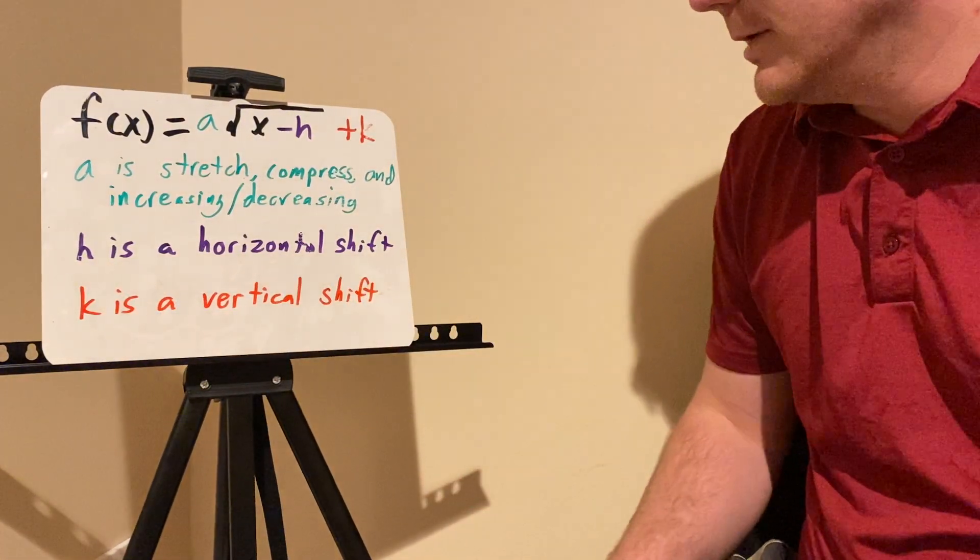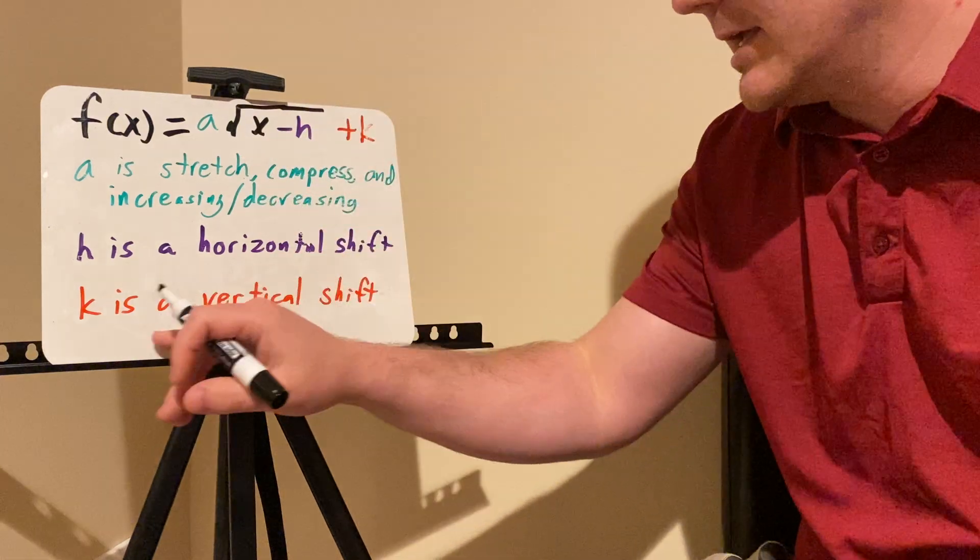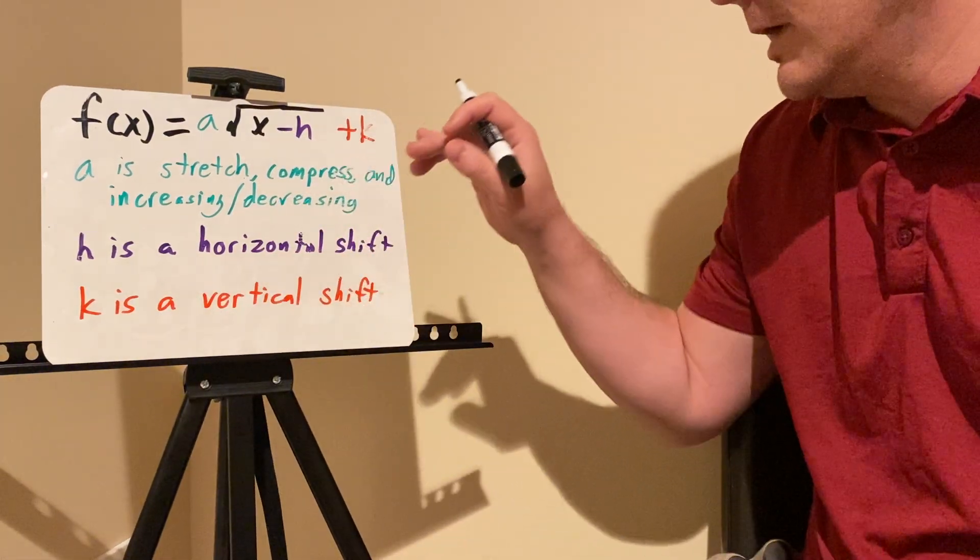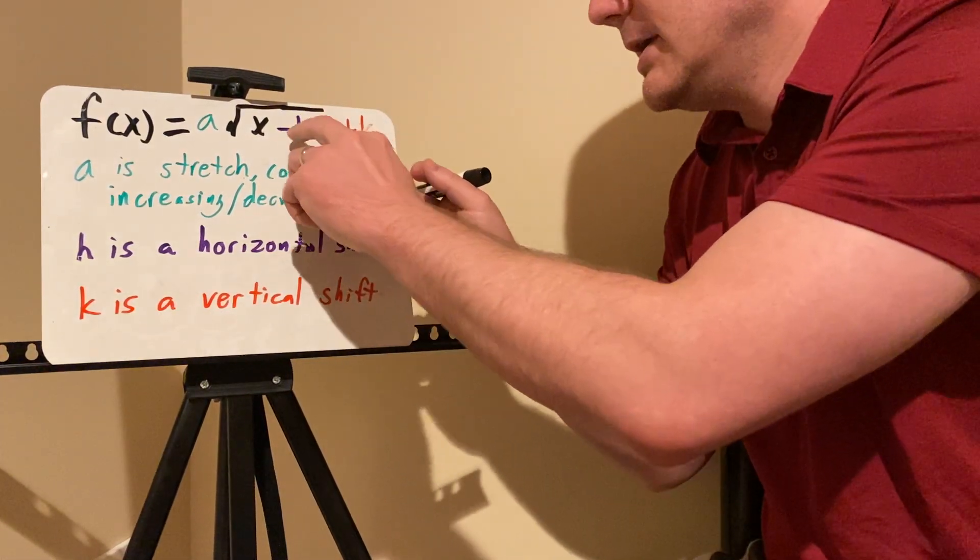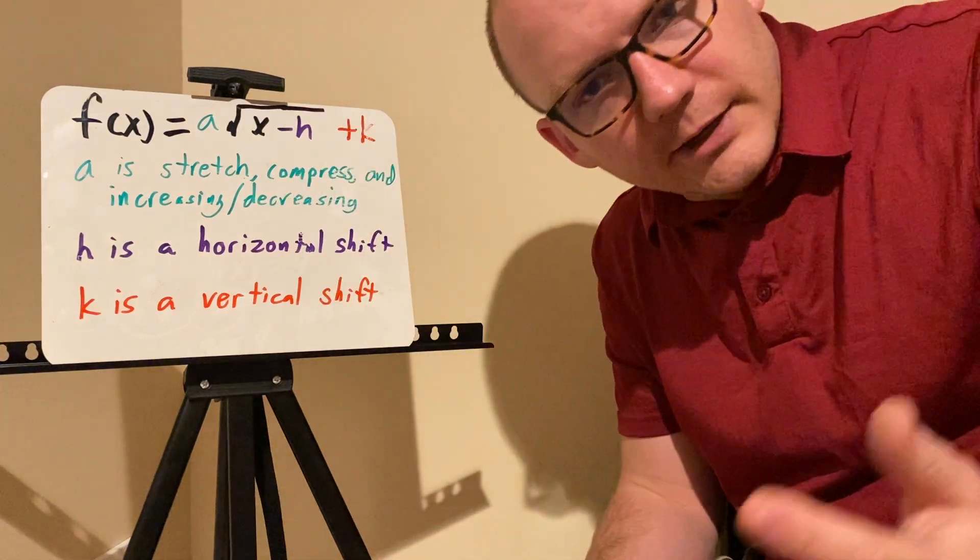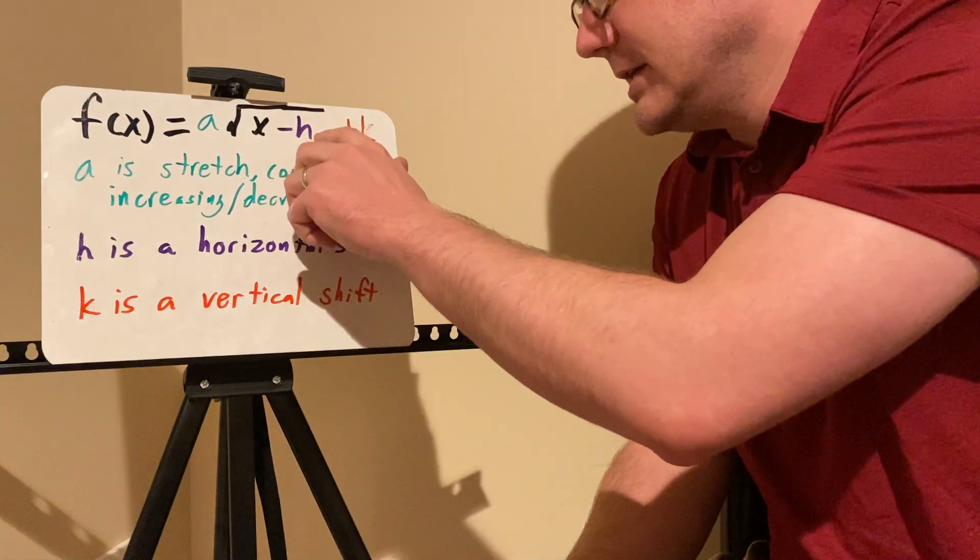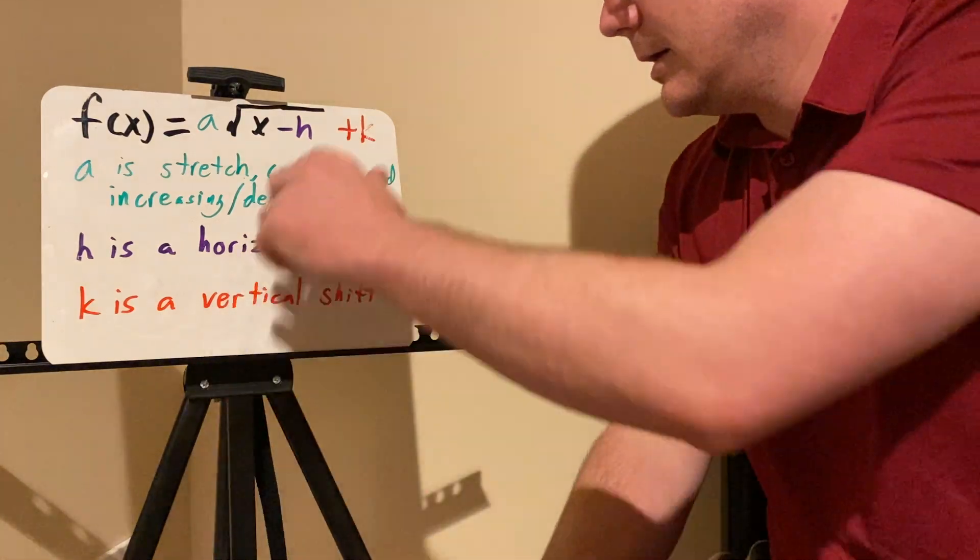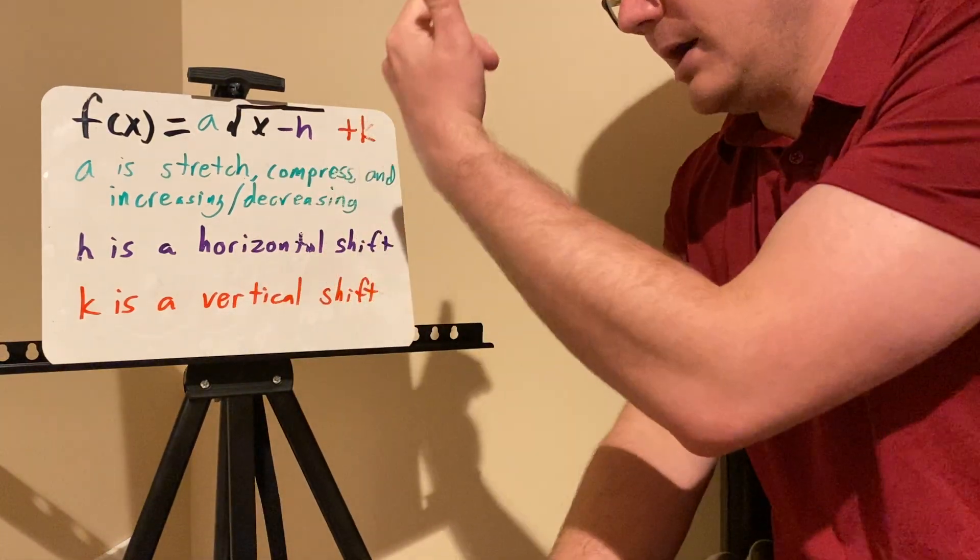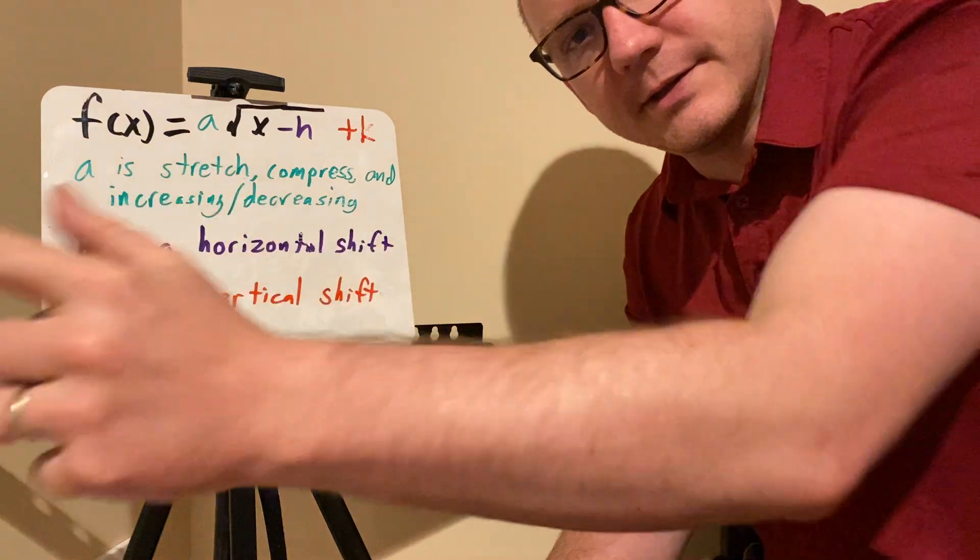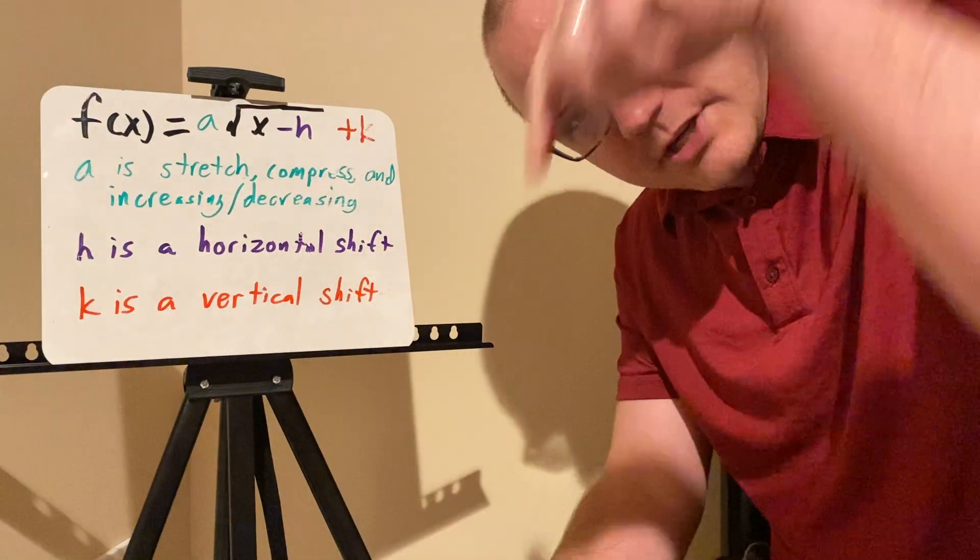And H is your horizontal shift. Again, it's minus H, and K is the vertical shift. And again, it's plus K. So the sign here will determine whether or not you're going up or down, left or right. Minus H is a shift to the right. Plus K is a shift up. Plus H is a shift to the left. Minus K is a shift down.